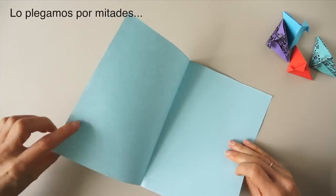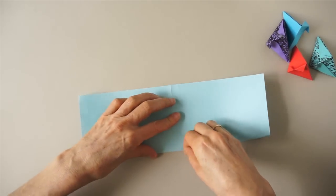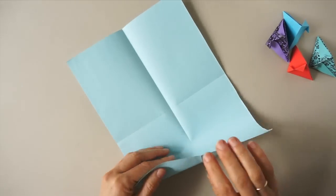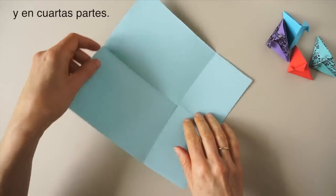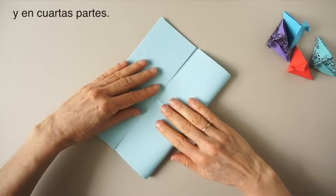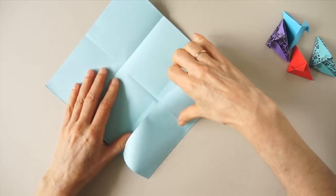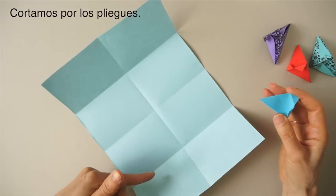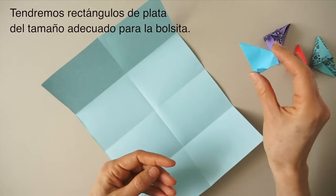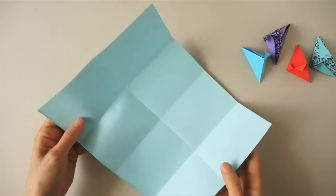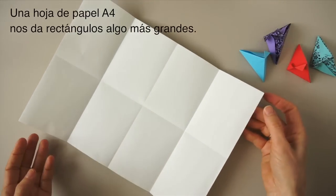We proceed to fold it in half both ways. And then we fold it in quarters. We need to cut along those folds. We will have pieces of paper to make fortune pouches about this size. A4 paper will give us slightly bigger rectangles for the pouches.